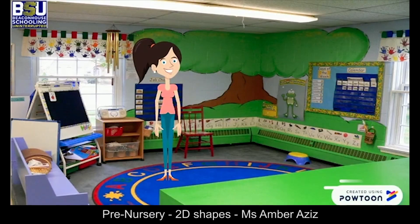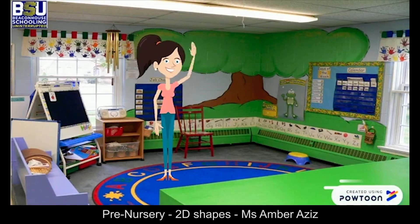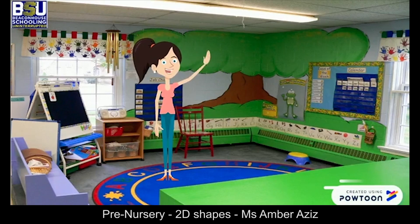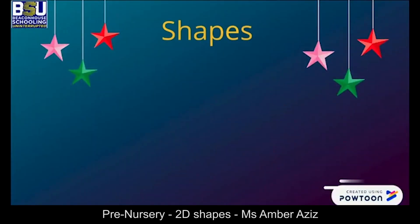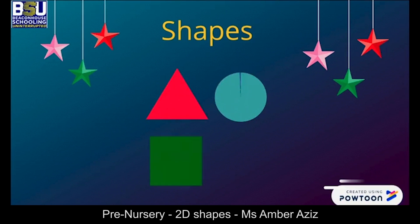Hello kids, how are you? Hope you all are fine out there. I'm your teacher today and today we will learn about 2D shapes. You know what, we can see shapes everywhere. 2D shapes are flat. Different types of 2D shapes are triangle, circle, square, and rectangle. Let's have a look at each one of them.